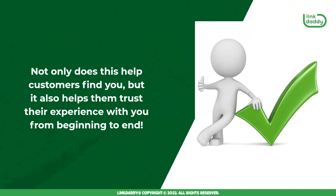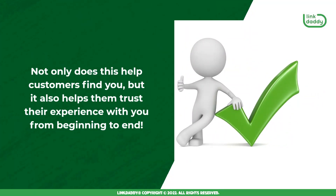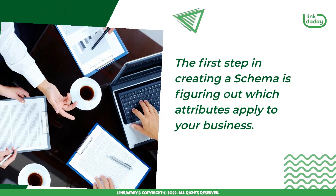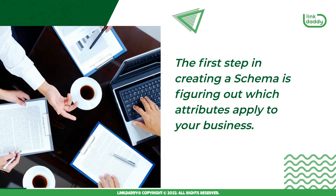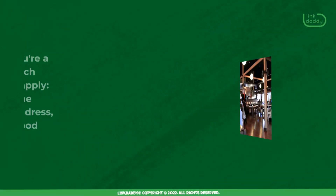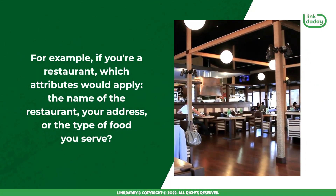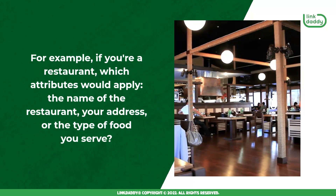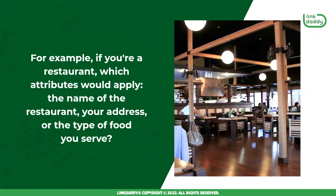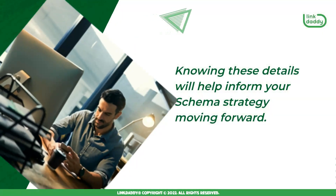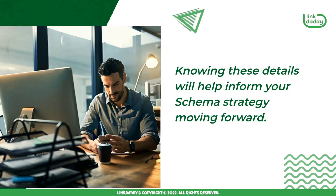Not only does this help customers find you, but it also helps them trust their experience with you from beginning to end. The first step in creating a Schema is figuring out which attributes apply to your business. For example, if you're a restaurant, which attributes would apply — the name of the restaurant, your address, or the type of food you serve. Knowing these details will help inform your schema strategy moving forward.